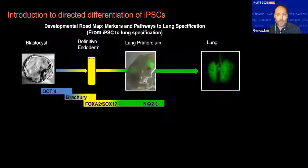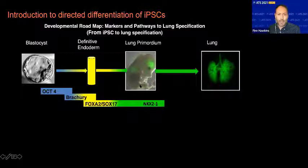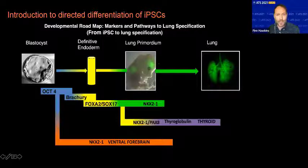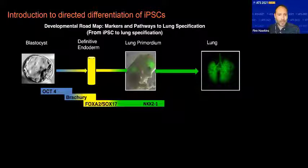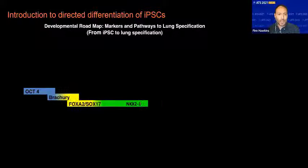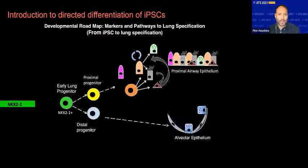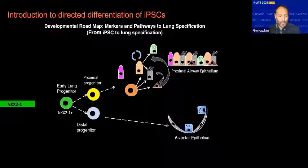NKX2-1 is shown here in a picture of an NKX2-1 GFP mouse — you can see the GFP fluorescence in the lung domain, but also in the forebrain domain because NKX2-1 is not specific to the lung. It is also expressed in the thyroid. We are captivated by this transcription factor because in the developing mouse and presumably in the developing human, those very first few cells that start to express NKX2-1 ultimately give rise to all the cell types that form the proximal airways and the distal alveolar epithelial cells.